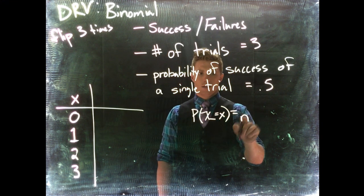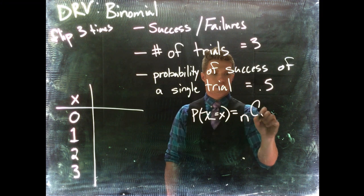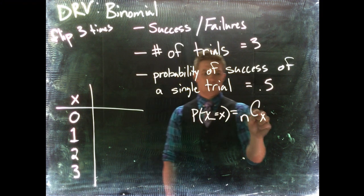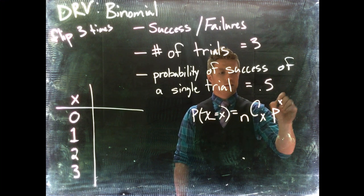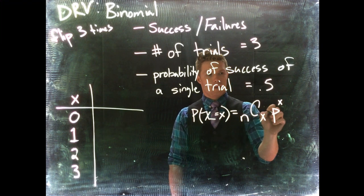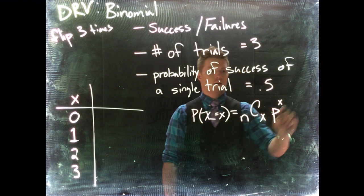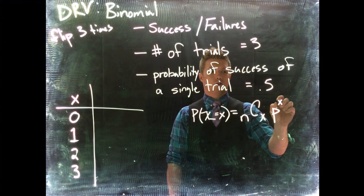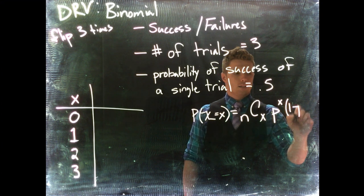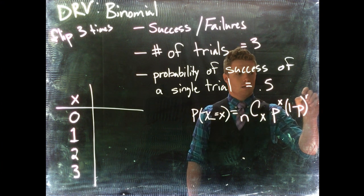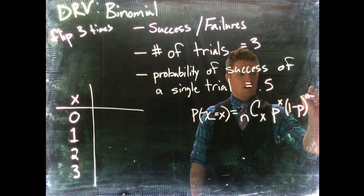N, number of trials that we're doing, combination X, how many successes that we have. And then we're going to multiply by P to the X. So the probability of success, this guy, X is our specific support member that we're on. And then 1 minus P raised to the power of N minus X.